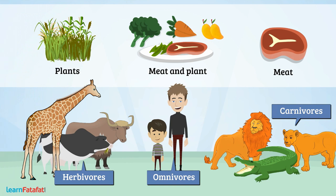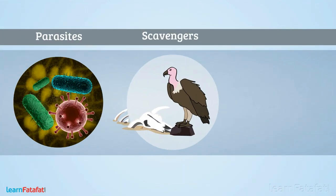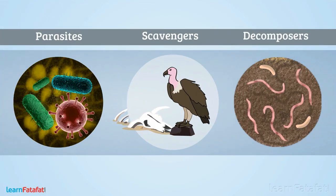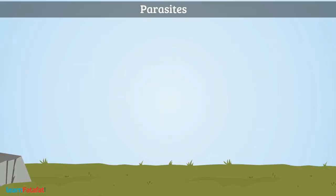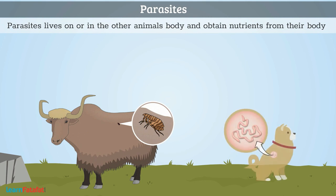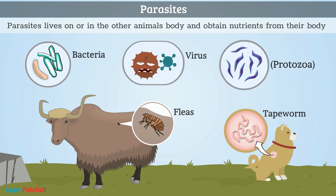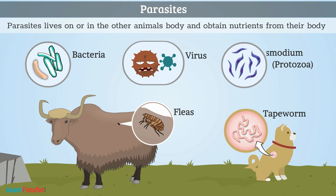Besides these three main categories, there are other animals such as Parasites, Scavengers, and Decomposers. Parasites are the animals which live on or in the other animal's body and obtain nutrients from their body. For example, Tapeworms, Fleas, Bacteria, Viruses, Protozoa such as Plasmodium, etc.